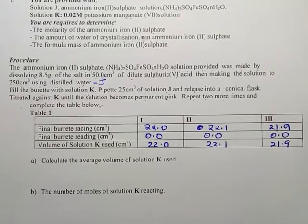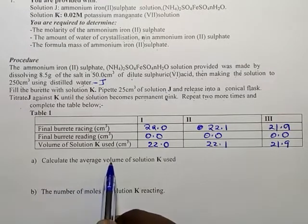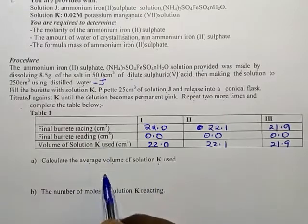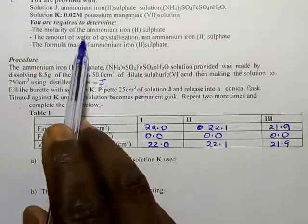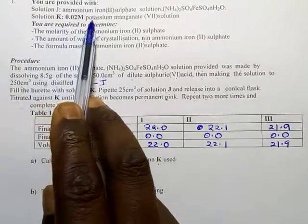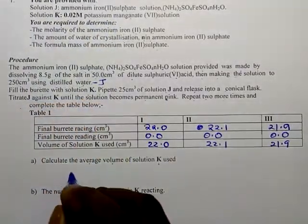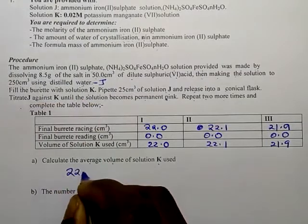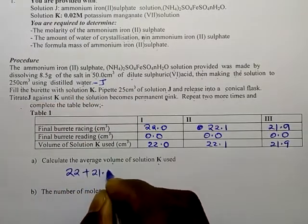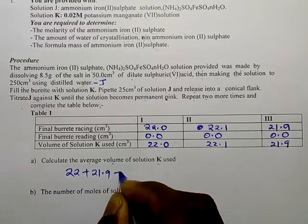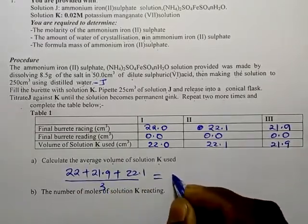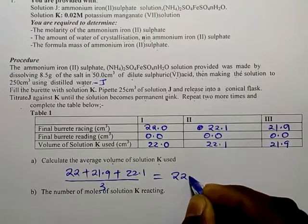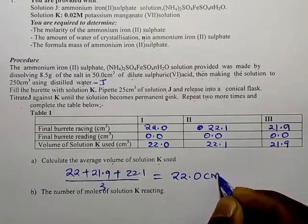Let us go straight and get the average volume. Calculate the average volume of Solution K — remember Solution K is potassium permanganate. The average is (22.0 + 21.9 + 22.1) divided by 3, which gives us 22 cm³.